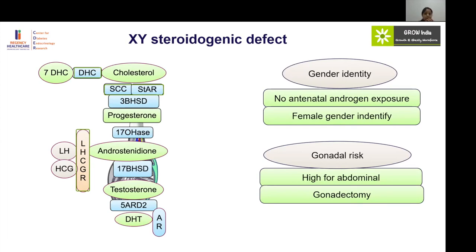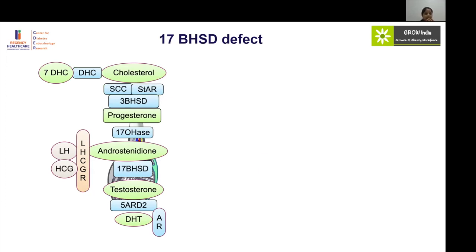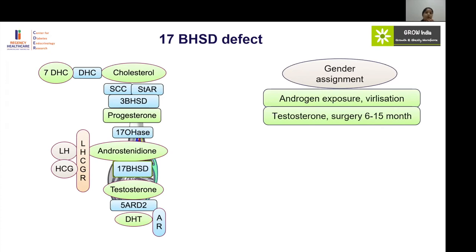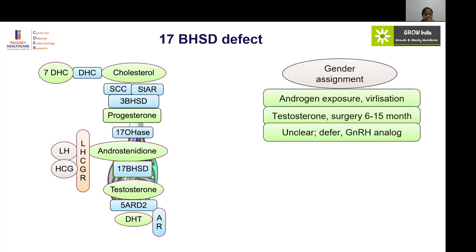For defects below the LH/CG receptor, like 17-beta-hydroxysteroid dehydrogenase deficiency — where androstenedione is converted to testosterone — gender assignment depends on androgen exposure in intrauterine life and the degree of virilization, since androstenedione can be peripherally converted to testosterone. If the gender of rearing is male, a trial of testosterone injections can be given and corrective surgeries done at 6 to 18 months for penoscrotal hypospadias repair. If unclear, surgeries should be deferred and GnRH analogues used until the gender of rearing is determined.